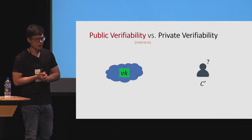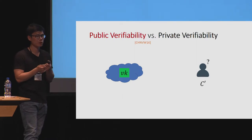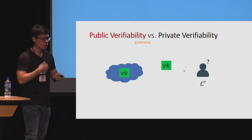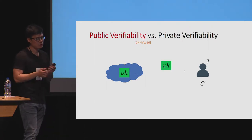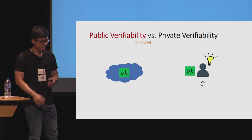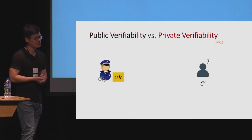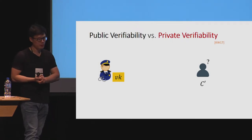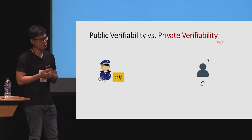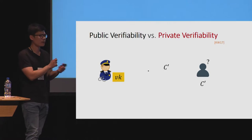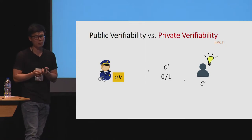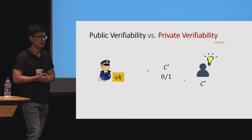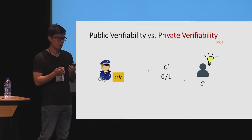In a publicly verifiable setting, all users in the system can have access to a public verification key. If they have some circuit C prime they want to check, they can just look up the public verification key and run the verification algorithm themselves. In a private verifiability setting, the verification key must be kept private from all users. If a user wants to check whether a circuit is marked or unmarked, it has to go to some verifying authority who runs the verification algorithm for the user. This private verifiability setting is weaker, but still useful for many watermarking applications.